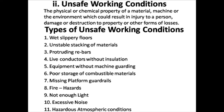The physical or chemical property of a material, machine, or environment which could result in injury, damage, or destruction is termed an unsafe working condition. There are 11 types: wet slippery floors, unstable stacking of materials, protruding rebars, live conductors without insulation, equipment without machine guarding, poor storage of combustible materials, missing platform guardrails, fire hazards, insufficient light, excessive noise, and hazardous atmospheric conditions.